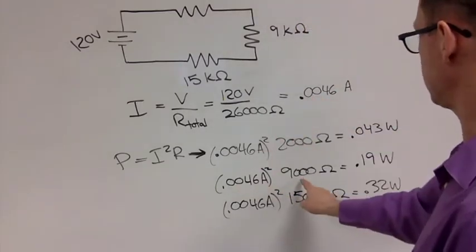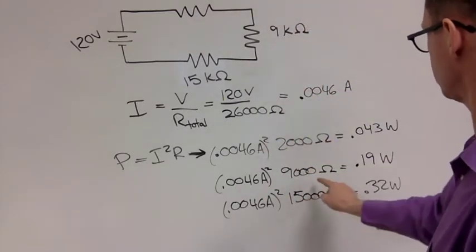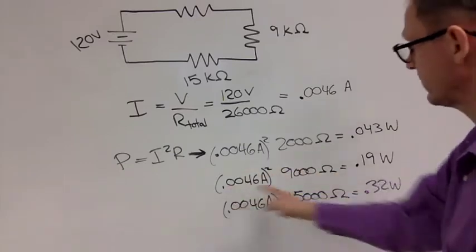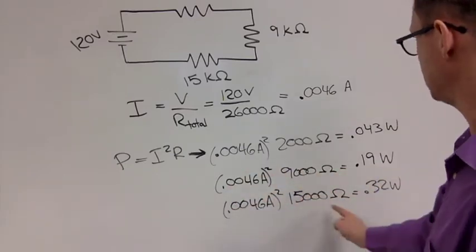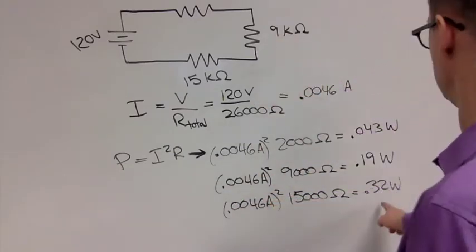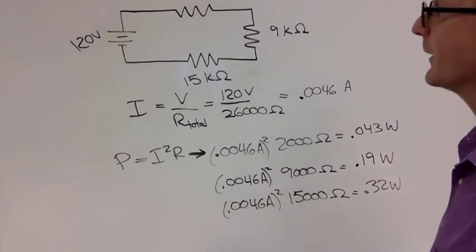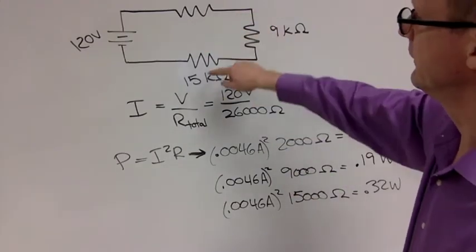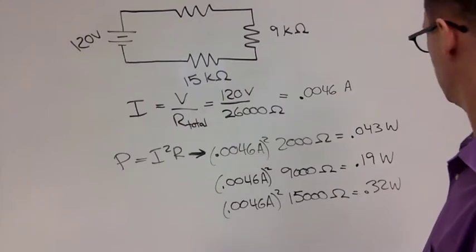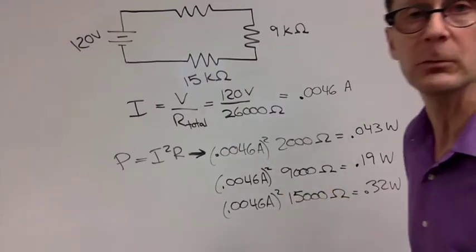And for the 9,000 ohms, the 9-kilohm resistor, 0.19 watts, the same process. And the same process for 15,000 gives us 0.32 watts as the power dissipated in the 15,000 ohm resistor.